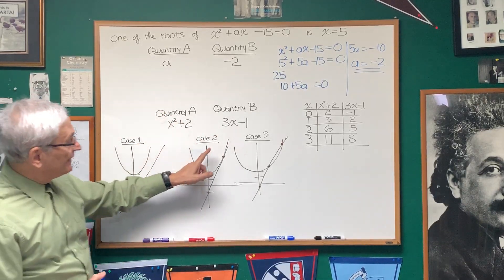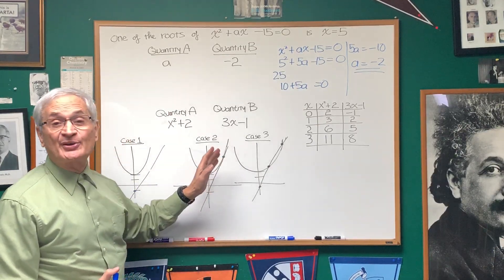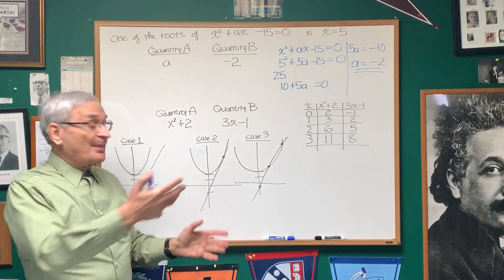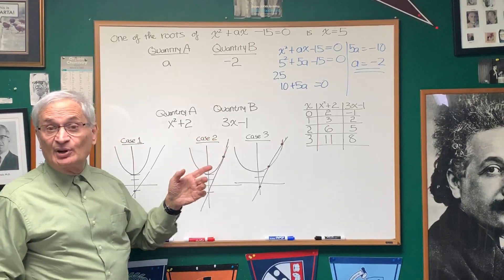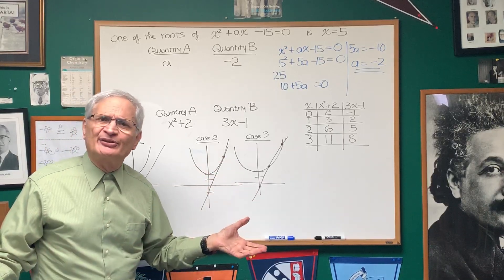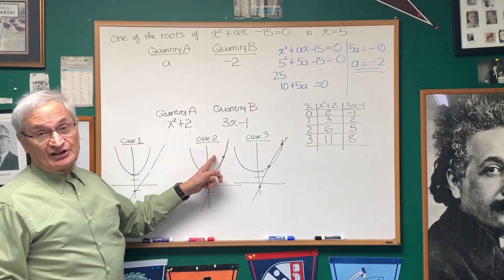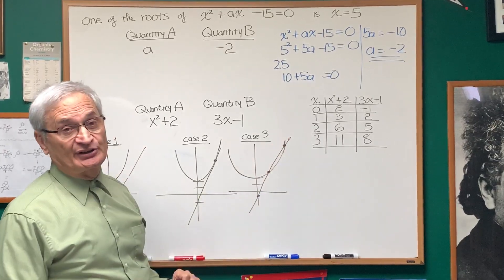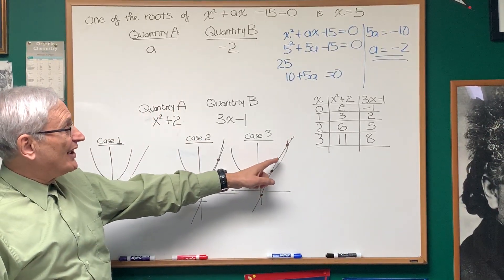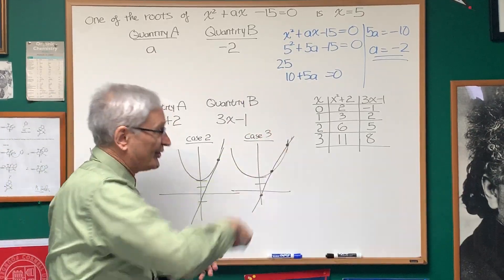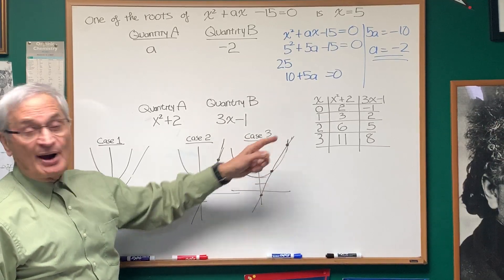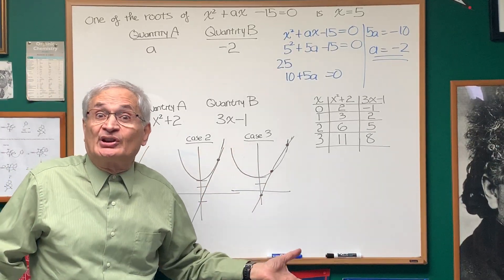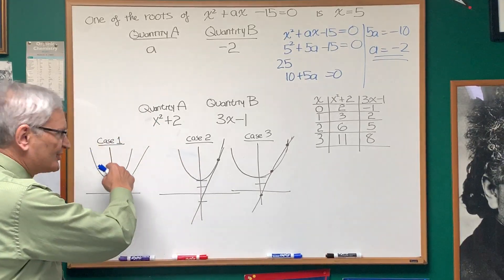In case 2, there is one point of intersection between the line and the parabola, in which case there is one point where the two y values are equal. But for the remainder of the x values, the y values of the parabola would be greater. So for that ambiguous case, we don't have enough information to answer the question specifically, so the answer would be D, not enough information. Finally, we have case 3, where the line intersects the parabola at two points. In between those two points, the y values of the line are greater. But otherwise, they're equal at the points of intersection, and otherwise the values of the parabola are greater. So which one is it? In that case we also choose D, not enough information, no interval is specified.